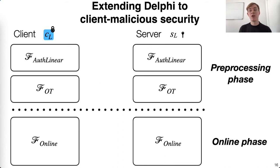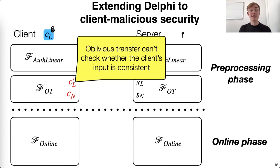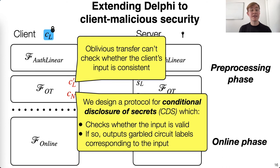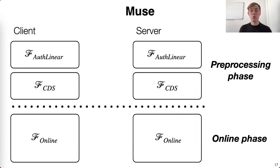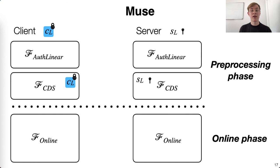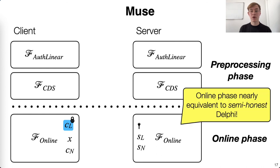But there's still an alternate attack that exists, which is that the client could provide an inconsistent linear state as input to the oblivious transfer. So we need some mechanism to ensure that the client's input to the oblivious transfer is correct. To do this, we design a protocol for conditional disclosure of secrets, or CDS, which checks whether the input is valid, and only if so outputs the garbled circuit labels corresponding to the input. With both of these components, we can now present a high-level overview of Muse. Both parties run the authenticated linear phase, then they run the CDS protocol which checks that the client provides a consistent input, and finally they run the online phase where the server checks that the client's MACs are correct. The only difference in the online phase compared to the semi-honest Delphi is that the server is checking a few of the client's MACs.